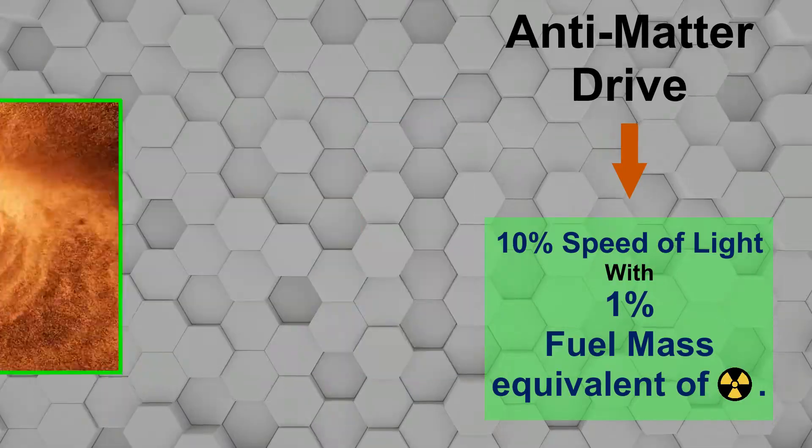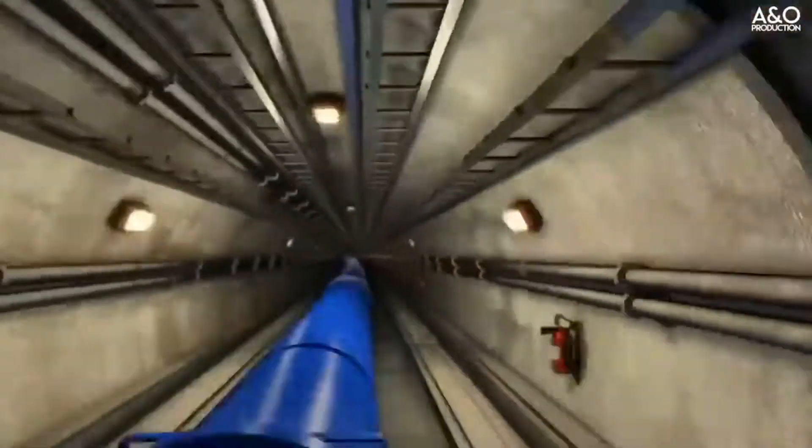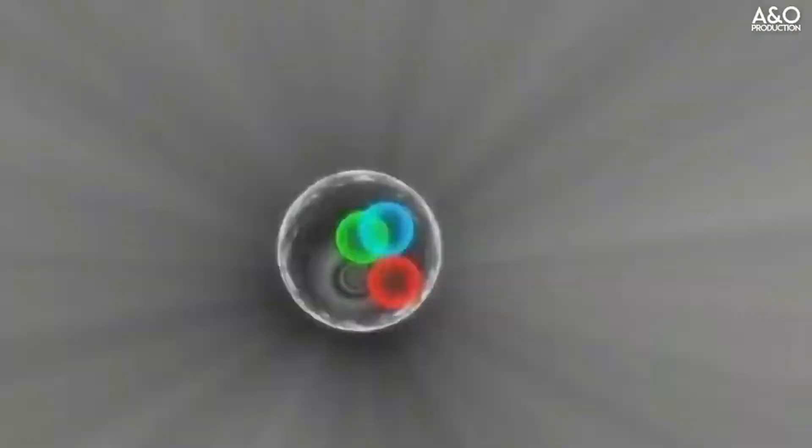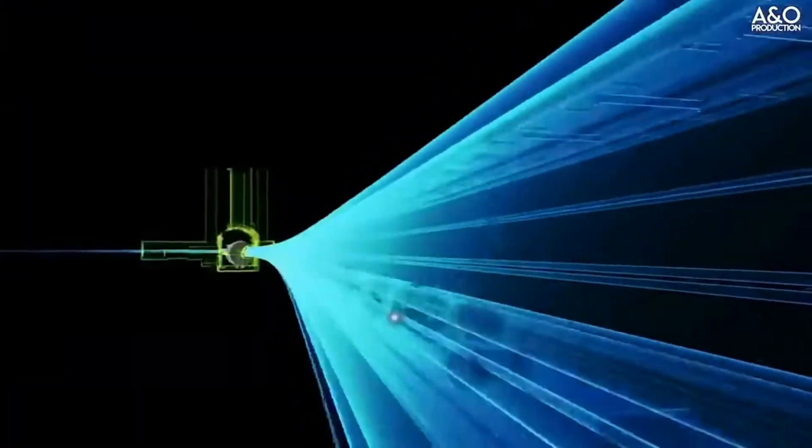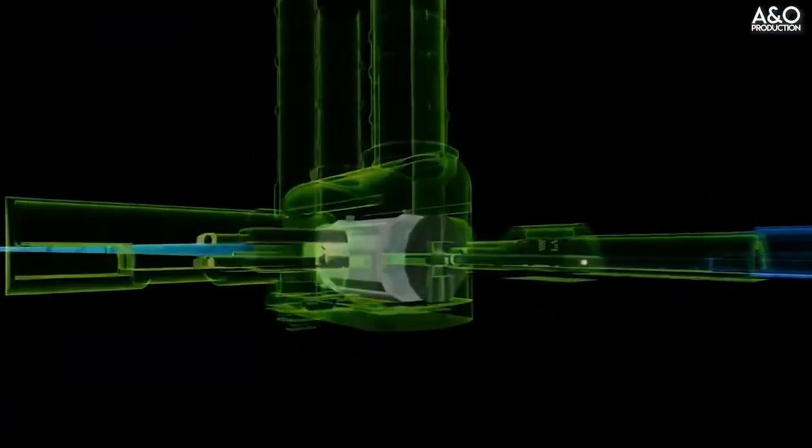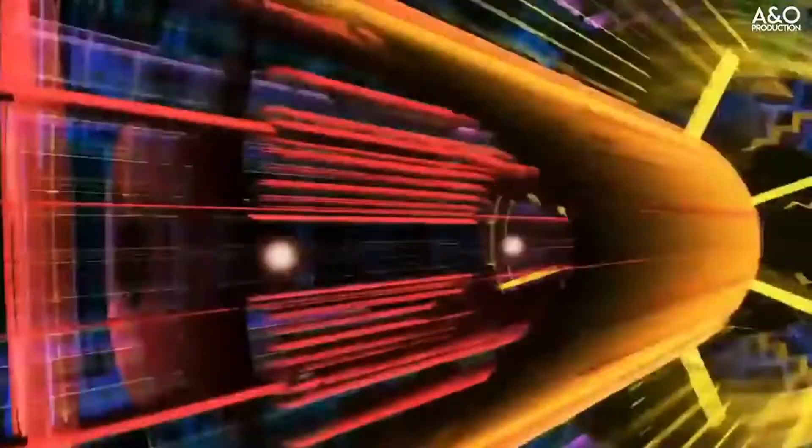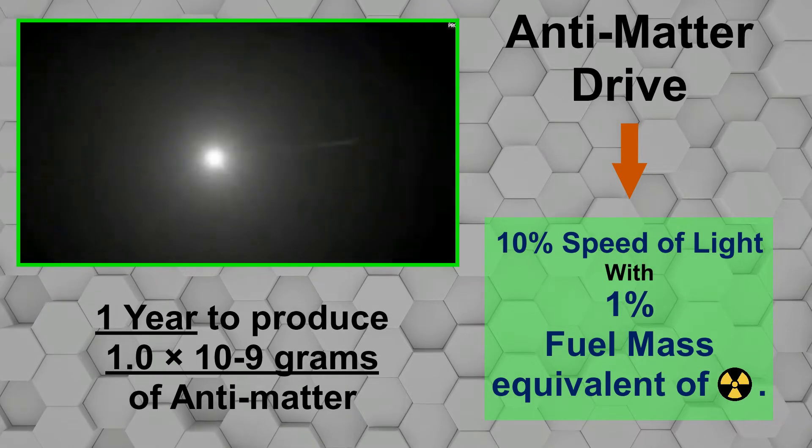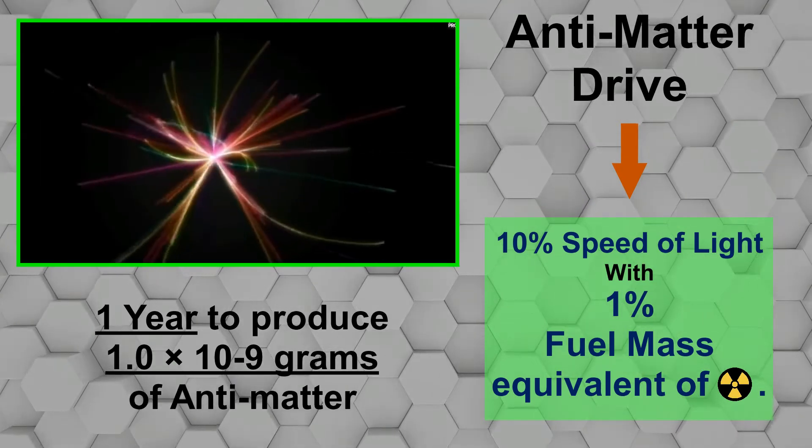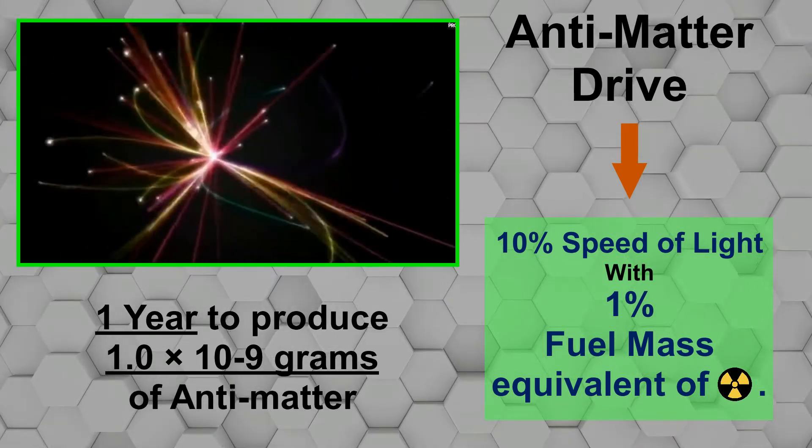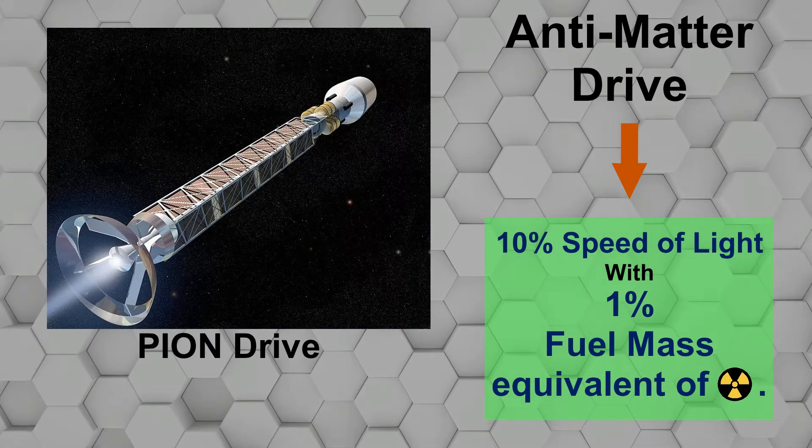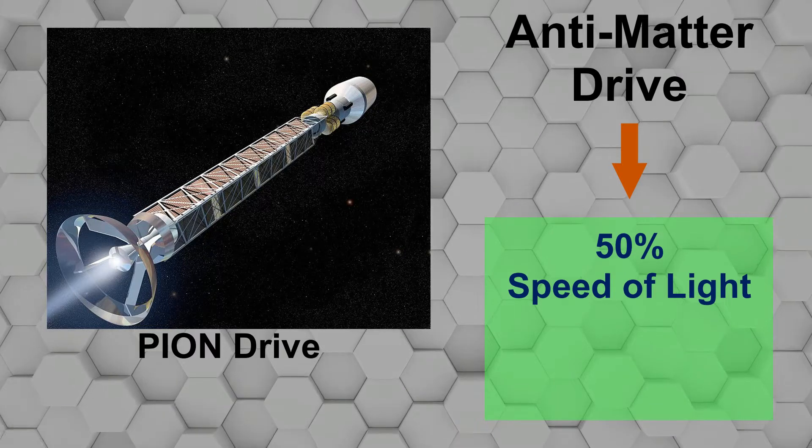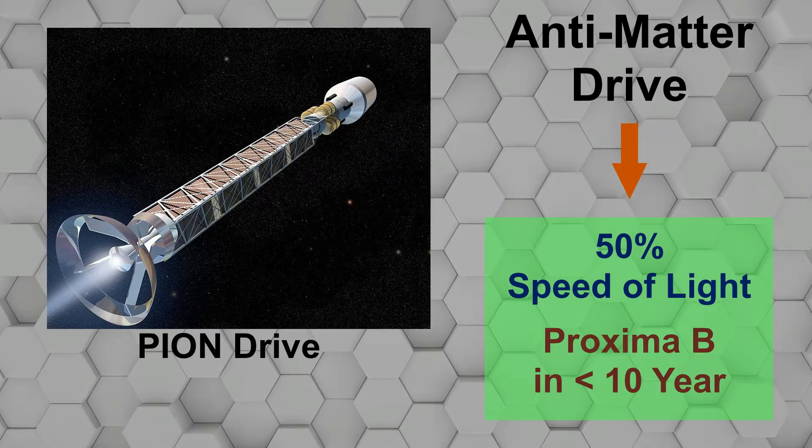Antimatter is produced in experiments conducted in particle accelerator at CERN, but the harvesting and storing of antimatter is extremely difficult. The process is very slow and immensely expensive. Even if we use accelerators only for making antimatter, it would take one year to produce one billionth of a gram. And to reach Proxima B, we need tens of kilos of antimatter. If we can produce this quantity of antimatter, then we can use pion drives to accelerate up to 50% speed of light, which could take us to Proxima B in under 10 years.